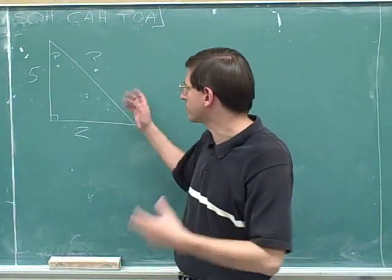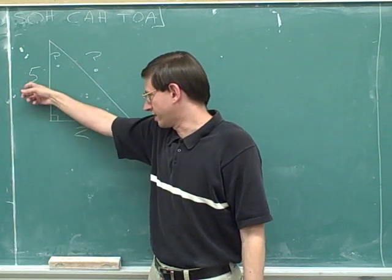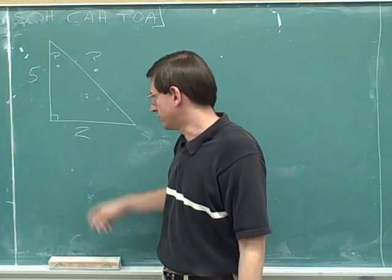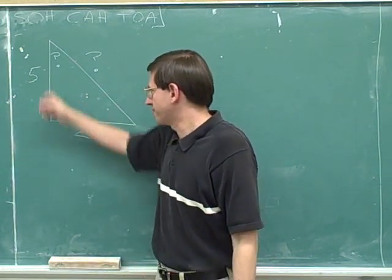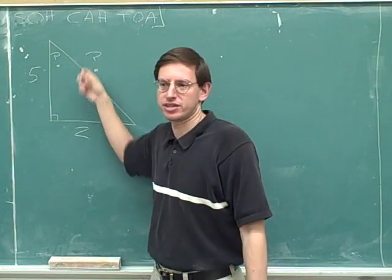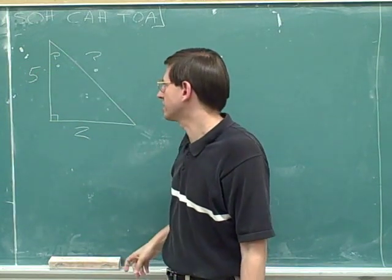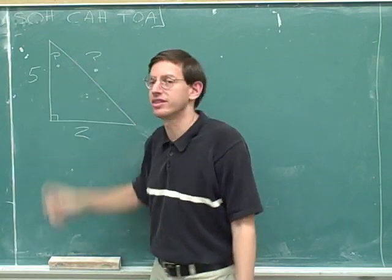Here we go with another problem. Here we have another right triangle. One side has a length of 5, another side has a length of 2, and I'm going to ask you to figure out how big this angle is and how big this side is. Try to figure out the questions indicated by the question marks: this side and this angle.